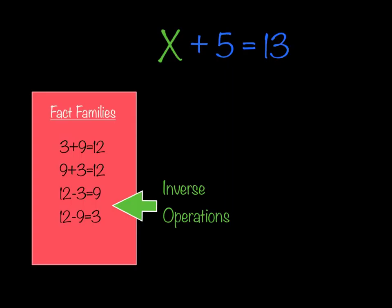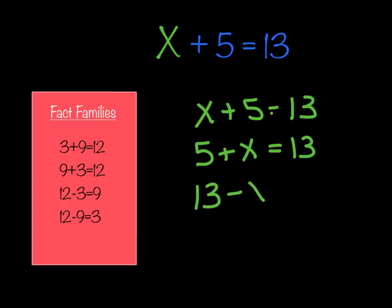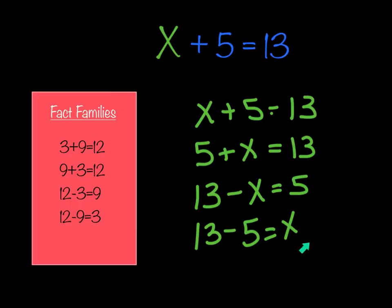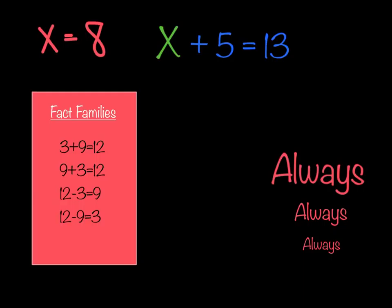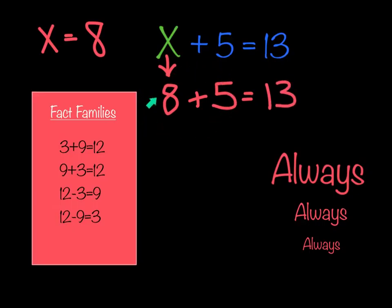We're going to use that same method to solve for x. So if I identify the fact families for x plus 5 equals 13, I list all four members: x plus 5 equals 13, then 5 plus x equals 13. Moving to subtraction, I get 13 minus x equals 5, and 13 minus 5 equals x. My goal is to get the variable on the other side of the equal sign, so I just solve the problem: 13 minus 5 equals 8. Therefore, x must equal 8.